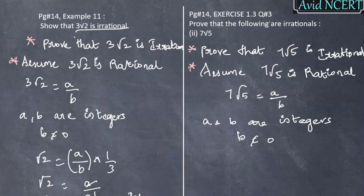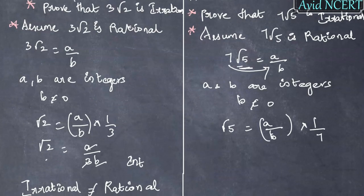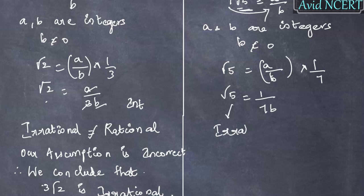Similar to before, we take √5 to the left-hand side: √5 equals A by B into 1 by 7. This 7 comes down, so √5 equals A by 7B. We know that √5 is Irrational. Whereas 1, 7, and B are Integers, therefore A by 7B is Rational.